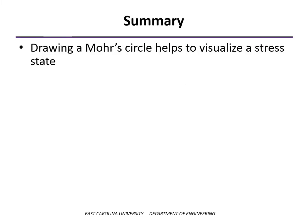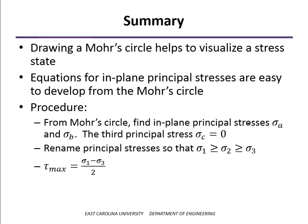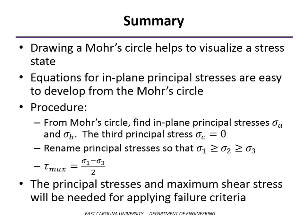In summary, drawing a Mohr circle gives a lot of insight and helps you visualize the stress state more than just plugging into equations — and the equations drop out of it easily rather than requiring memorization. The steps are: draw the Mohr circle to find the two in-plane principal stresses, remember the third is equal to zero, then rename them so sigma 1 is the largest and sigma 3 is the smallest. The maximum shear stress is always half of sigma 1 minus sigma 3. The principal stresses and maximum shear stress are important for determining failure depending on which failure criterion you apply.